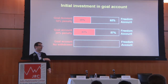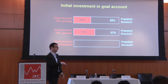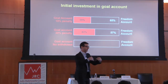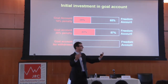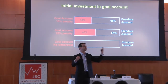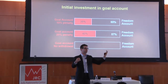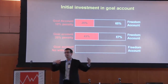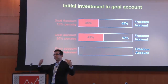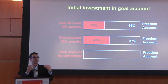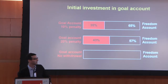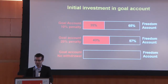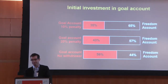In a third arm of the study, drawing subjects from the same population, we give them a choice between two accounts: a goal account that is now completely illiquid before the goal date, and a freedom account that's perfectly liquid — again at the same interest rate. Does making the goal account even more illiquid pull them in or drive them away? It pulls them in.